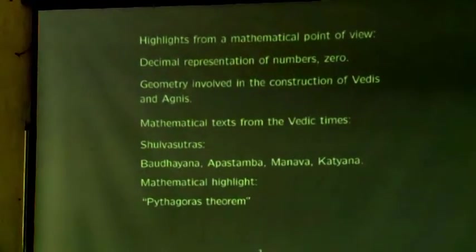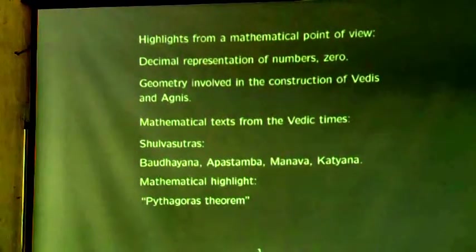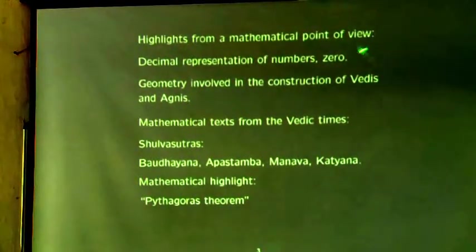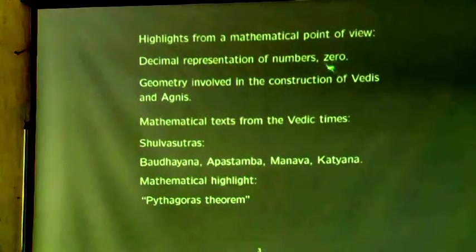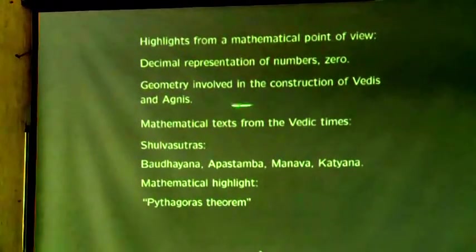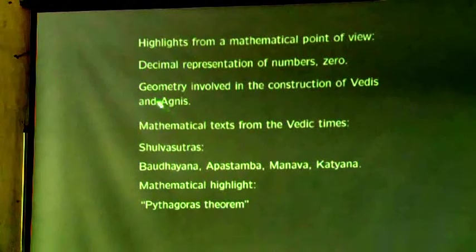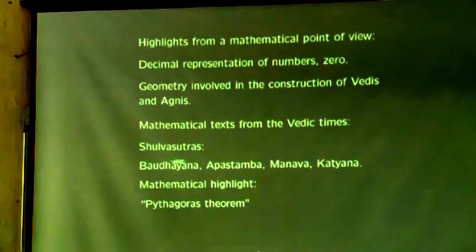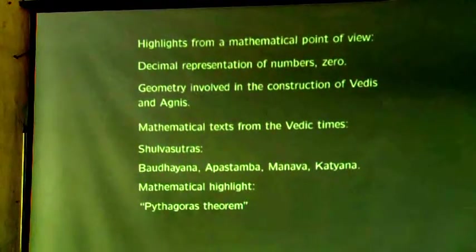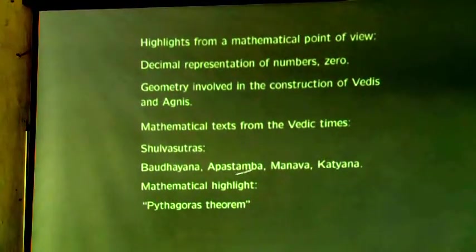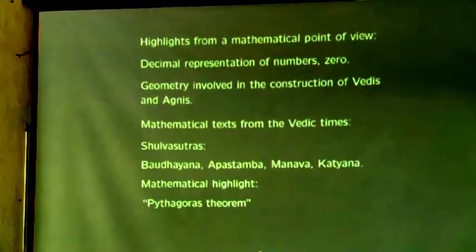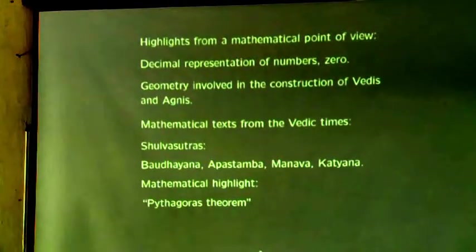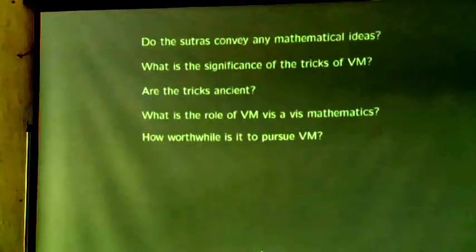From the mathematical point of view, we need to look at history in its context. Some mathematical highlights of the Vedic period are: decimal representation of numbers, the use of zero, and the geometry involved in the construction of Vedis (platforms) and Agnis (fireplaces). The key mathematical texts from Vedic times are the Shulva Sutras — including those of Baudayana, Apastamba, Manava, and Katyayana — among whose highlights is the Pythagoras theorem. There is also the Vedanga Jyotish.